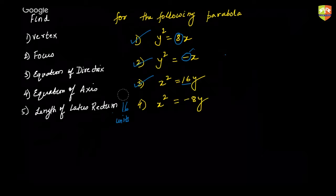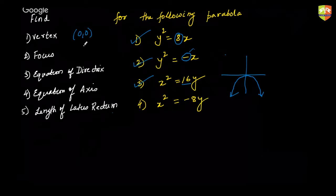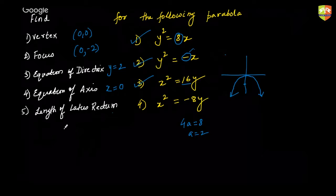Now moving on to the last problem: x² = -8y. This is going to be a parabola opening downwards. Vertex will continue to be at (0, 0). Focus would be at (0, -a). Remember 4a = 8, so a = 2, giving focus at (0, -2). Equation of the directrix will be y = a = 2. Equation of the axis is the y-axis: x = 0. And length of the latus rectum is 8 units. So by this we have completed all four questions.